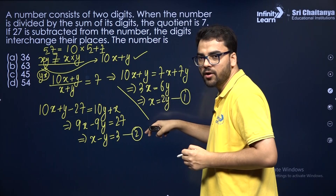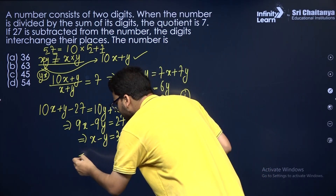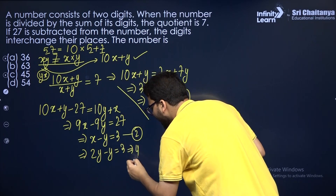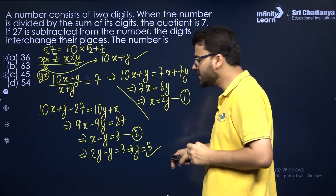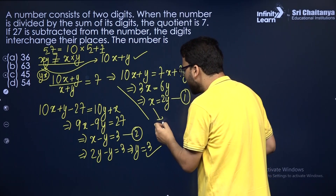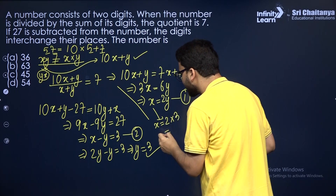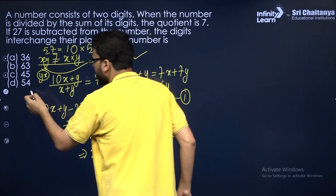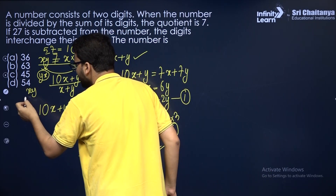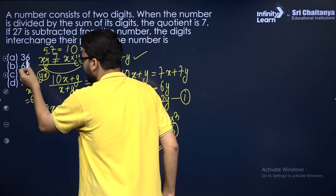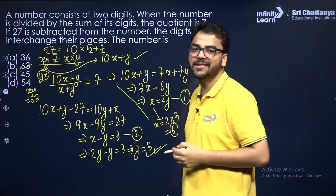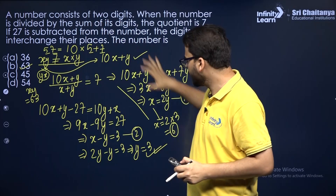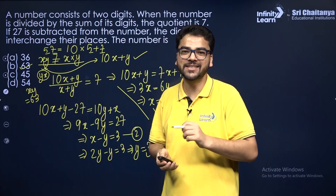Now substituting x equals 2y from the first equation into x minus y equals 3: 2y minus y equals 3, so y equals 3. Then x equals 2 times 3 equals 6. The number is of the form xy, so it is 63. Out of the given options, 63 is the answer. You can also verify by substituting these values of x and y back into the original conditions. I hope it is clear.